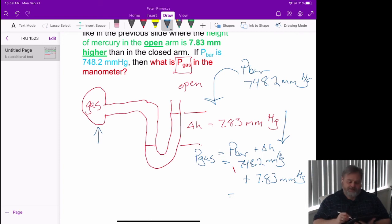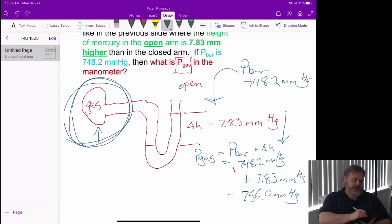And so when we add these together, 748 plus 7 is 755.83. So let's call that 756.0 millimeters of mercury. That would be the pressure of the gas in this container. Thank you.